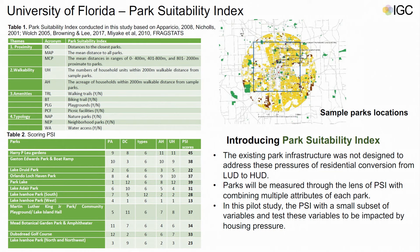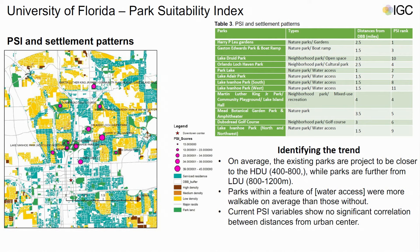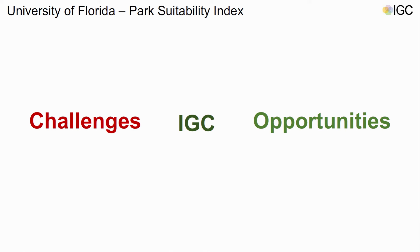The idea of the PSI is to offer a line to measure multiple attributes for each park. In our pilot study, we chose a small subset of variables and tested them to explore how parks' attributes are impacted by housing pressure. With a simple ranking order, each park's score is listed. We compare the PSI score with settlement patterns — particularly sprawl patterns analyzed in another paper — to identify clues and trends for follow-up study. On average, existing parks are projected closer to high density, and parks with water access features have higher workloads on average than those without.